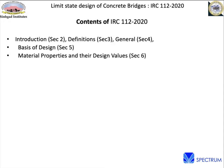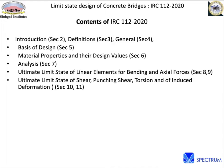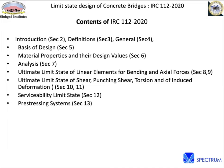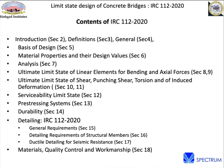Section 6 covers material properties and their design values. Analysis is in Section 7. The ultimate limit state for linear elements is in Sections 8 and 9. Shear, torsion, and induced deformation are in Sections 10 and 11. Serviceability limit state is Section 12, prestressing systems Section 13, durability Section 14, general detailing Section 15, member-specific detailing Section 16, ductile detailing for seismic resistance Section 17, and quality control is the last section.